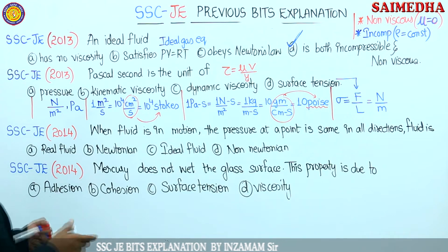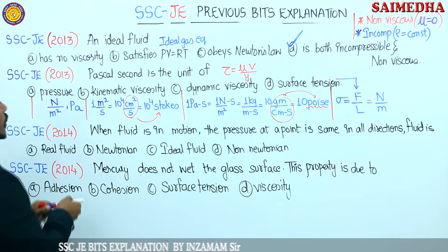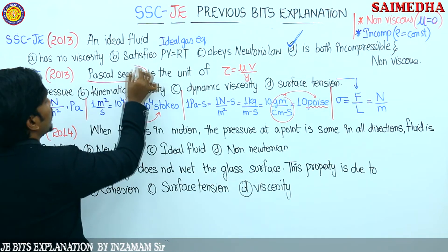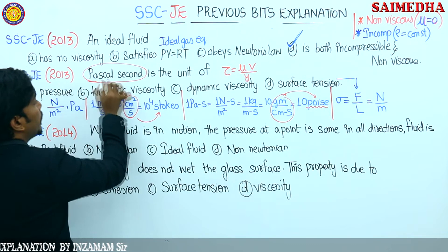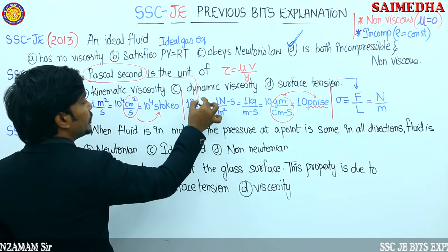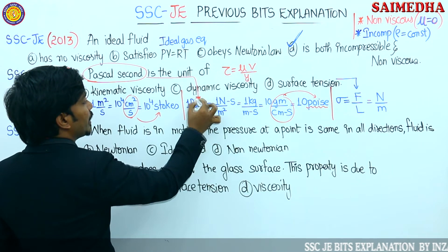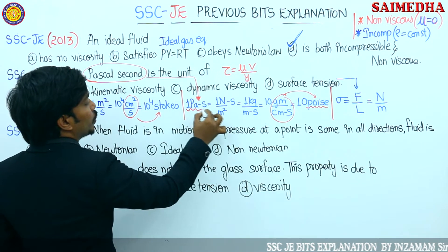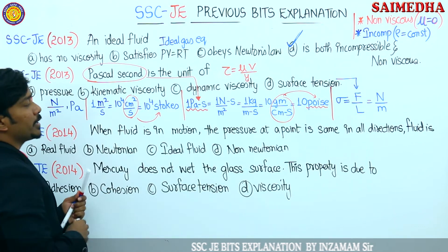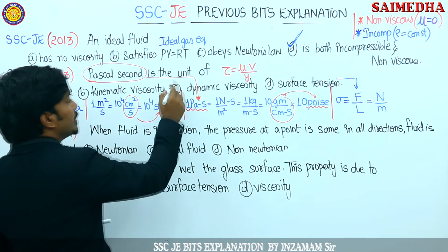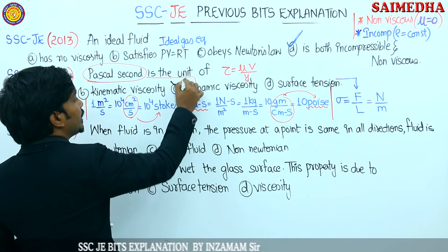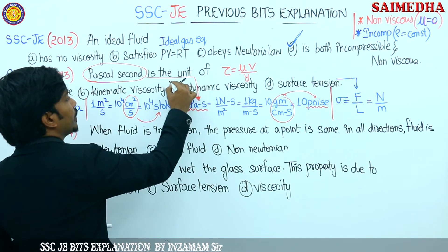Now observe what is being asked: Pascal's second is the unit of what? Pascal second appears in dynamic viscosity. So Option C is your correct answer.